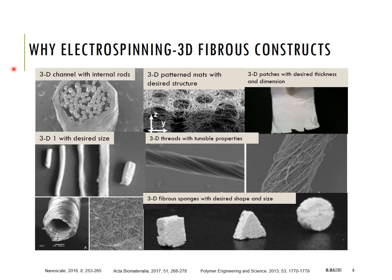Apart from fiber morphology, it is also possible to fabricate different 3D constructs using electrospinning. For example, 3D channels with internal rods, patterned mats, patches, tubes with desired sizes, and also sponges with desired shapes and sizes.